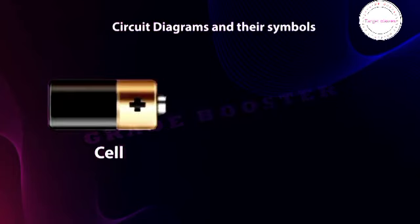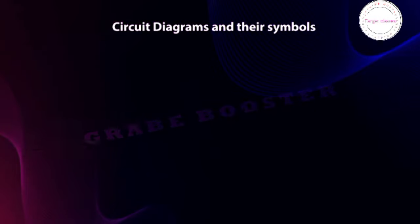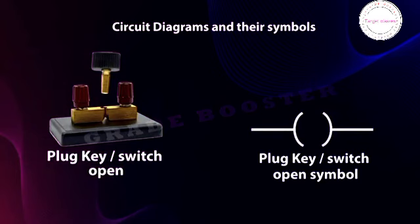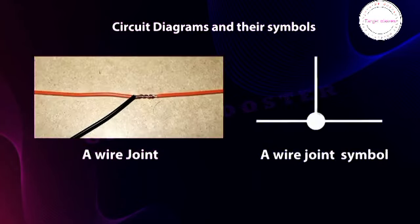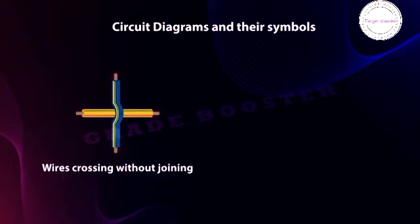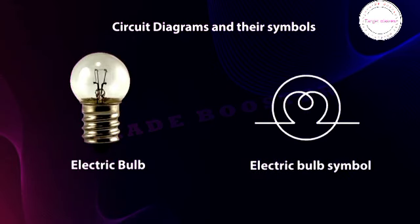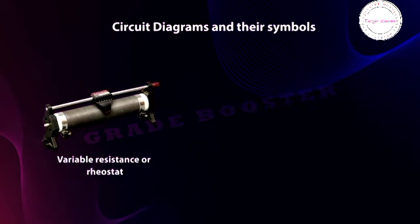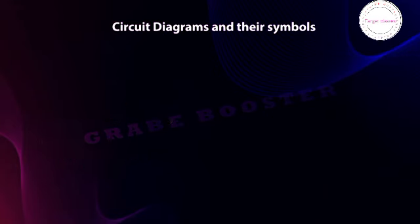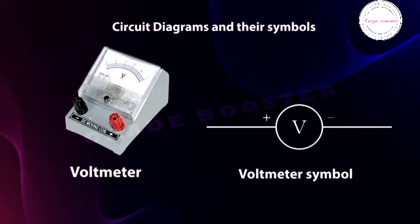Standard circuit symbols: an electric cell and its symbol; a battery or combination of cells and its symbol; plug key or switch open and its symbol; plug key or switch closed and its symbol; a wire joint and its symbol; wires crossing without joining and its symbol; electric bulb and its symbol; a resistor of resistance R and its symbol; variable resistance (rheostat) and its symbol; ammeter and its symbol; voltmeter and its symbol. By learning these symbols, you will be able to understand a diagrammatic representation of an electric circuit.